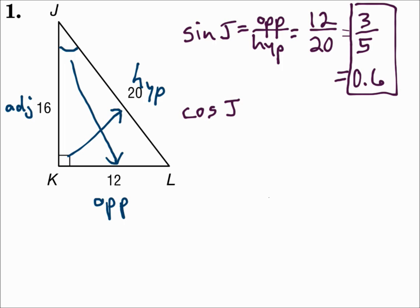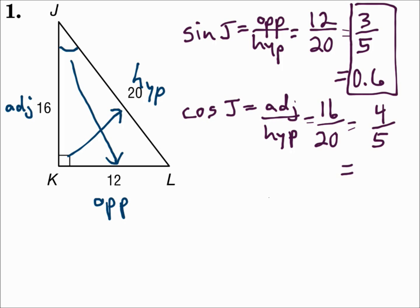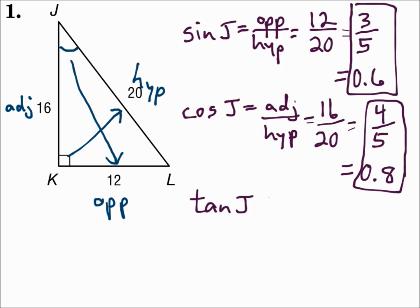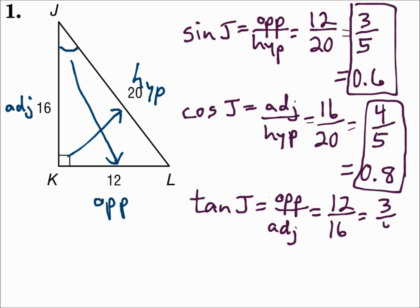Cosine of J equals adjacent over hypotenuse. Adjacent is 16, hypotenuse is 20, which reduces to 4/5, which is 0.8. Tangent of J equals opposite over adjacent. Opposite is 12, adjacent is 16, which reduces to 3/4, and as a decimal it's 0.75.